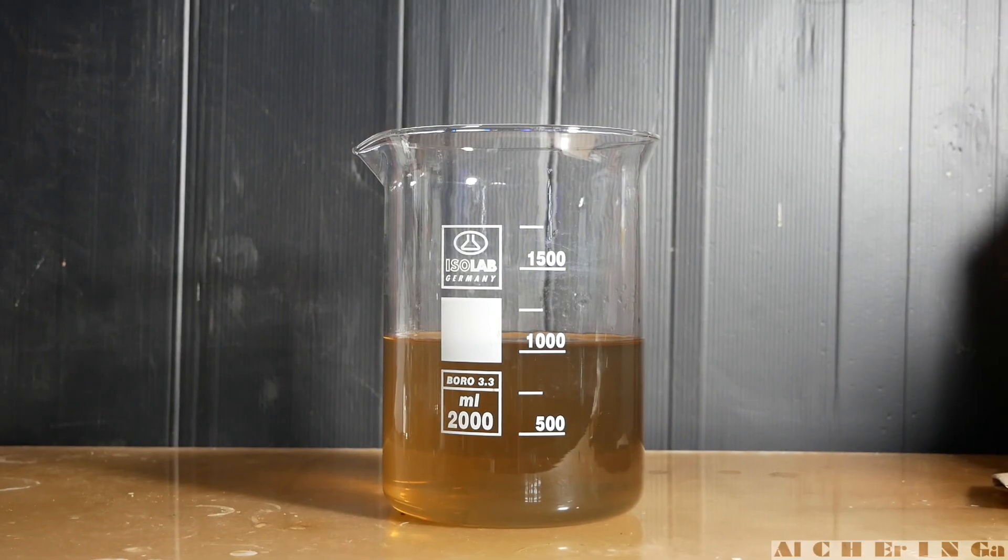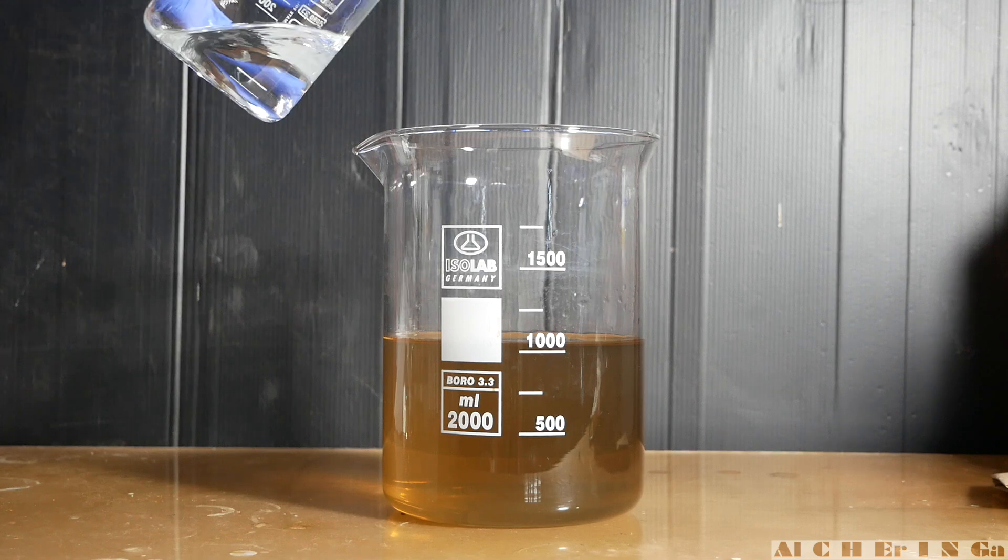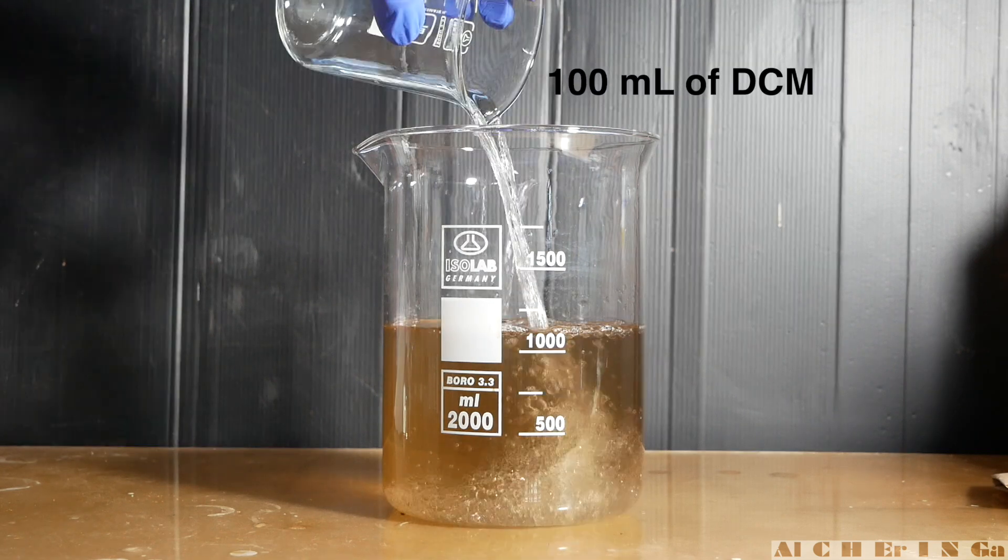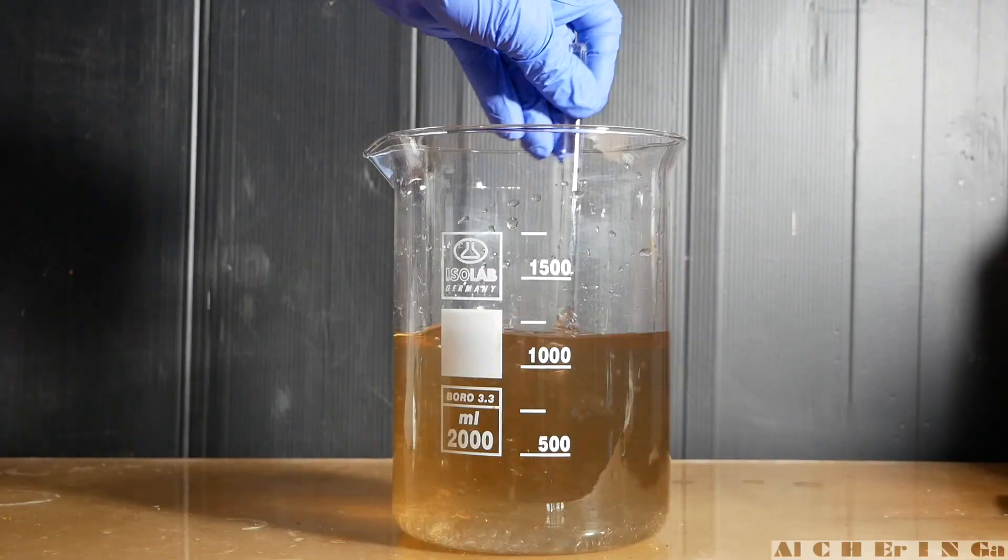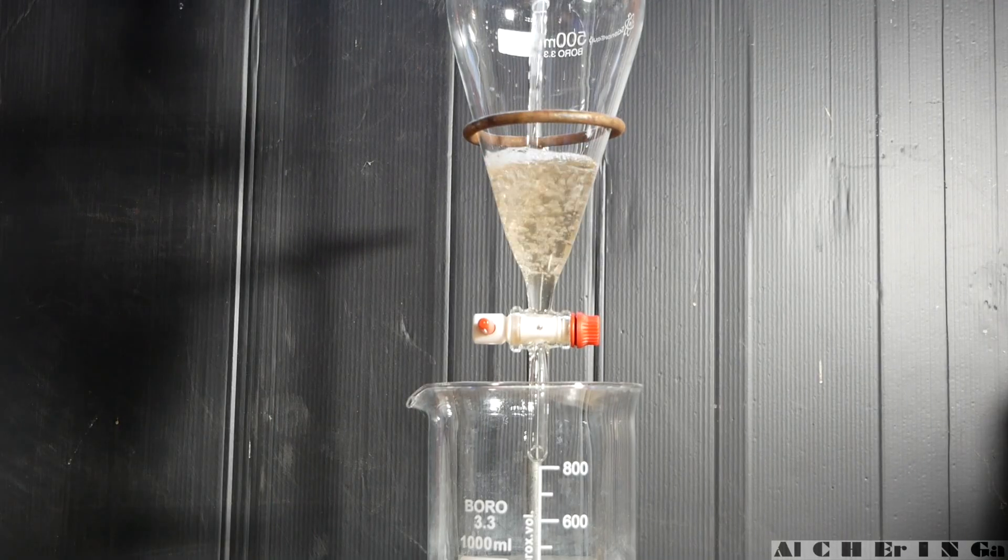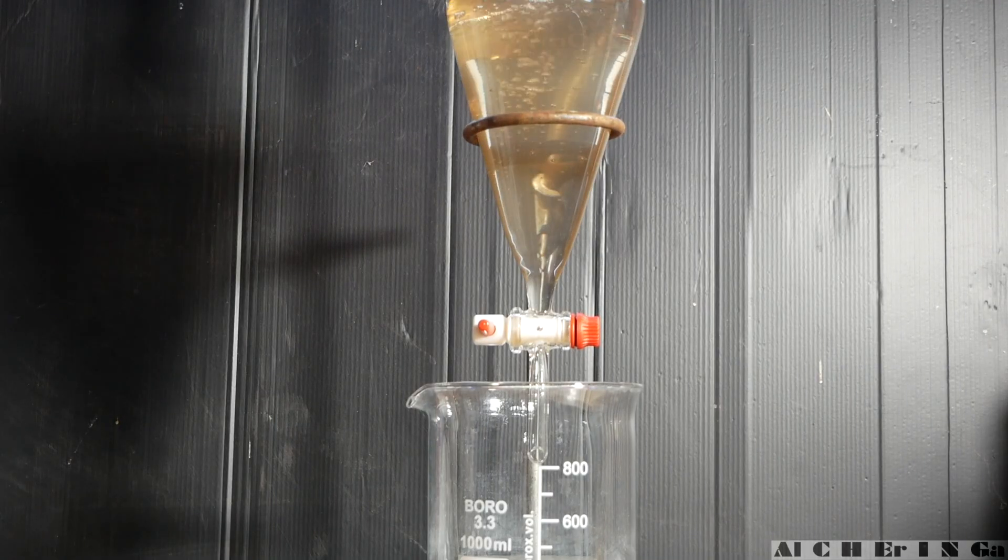Okay now, we have to extract the unreacted 1-phenyl-2-propanone from the reaction mixture with dichloromethane. Add 100 milliliters of dichloromethane. Stir the mixture thoroughly. Pour the contents into a separatory funnel and conduct the first extraction.